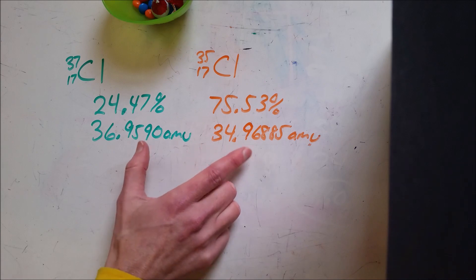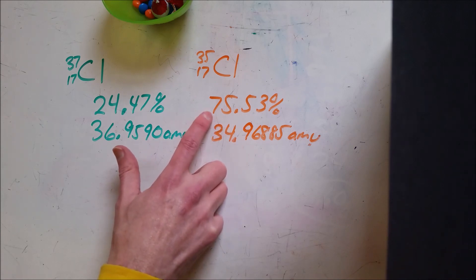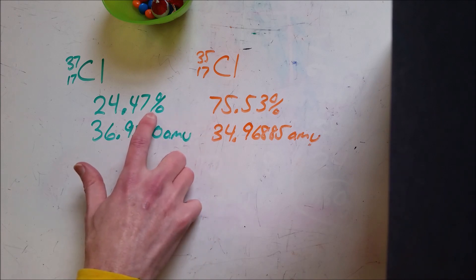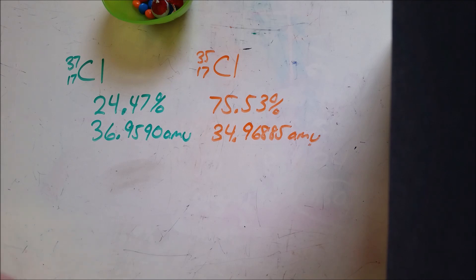But it's not just going to be me adding those two numbers up and dividing by two. I need to account for the fact that this one occurs almost three times—or a little more than three times—as frequently as this one does. So the way I would calculate that